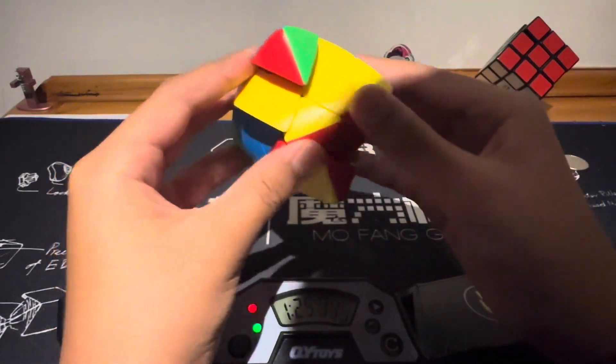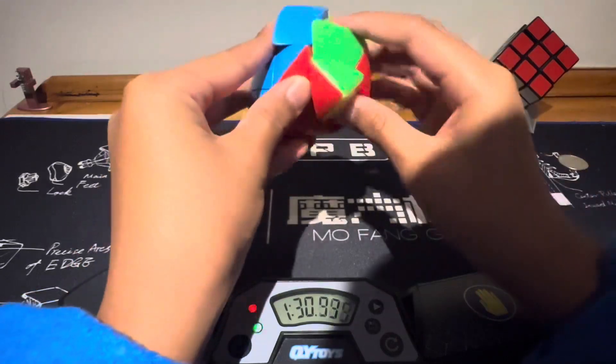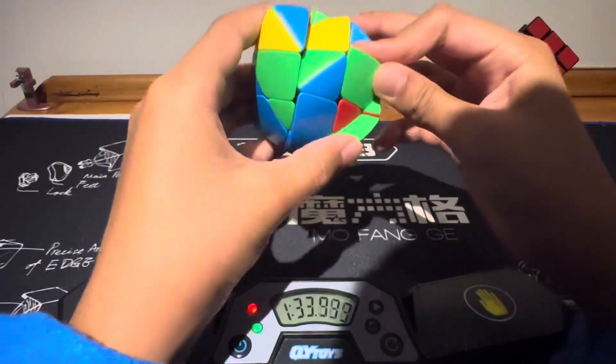The first pair done in sub 1:30. Okay, so we've got this corner and I can get this easy form over here.